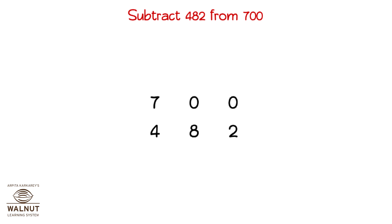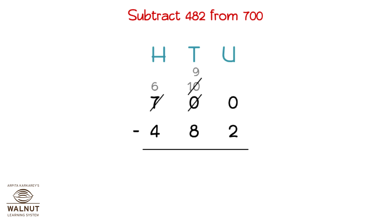Subtract 482 from 700. We write the numbers one below the other and write the place values. We look at the units place and have to borrow from the tens place, but there is a 0 there, so there is nothing to borrow. So we borrow from the hundreds place. The hundreds place can give to the tens place, not the units place. So we borrow and add it to the tens, then borrow from the tens and add it to the units. Then we subtract the units, subtract the tens, subtract the hundreds, and get the final answer.